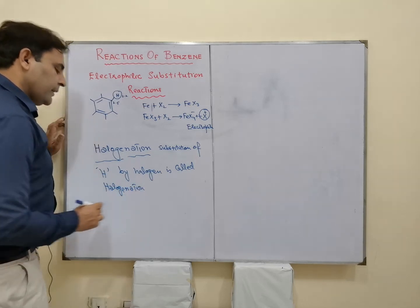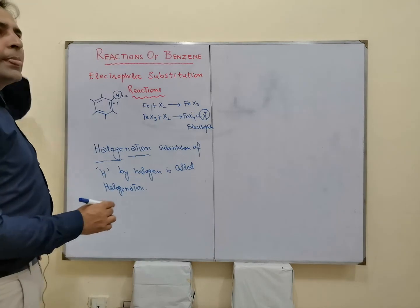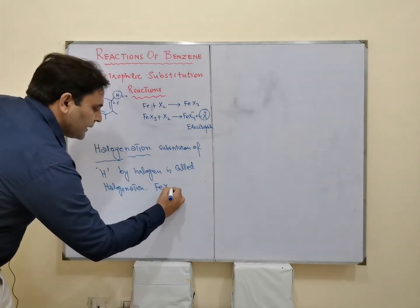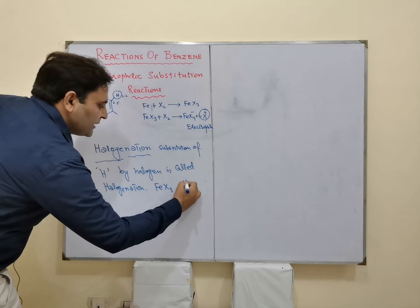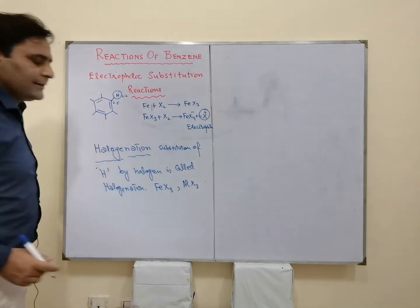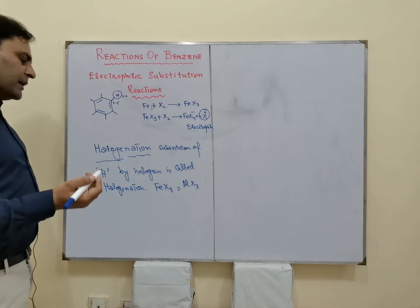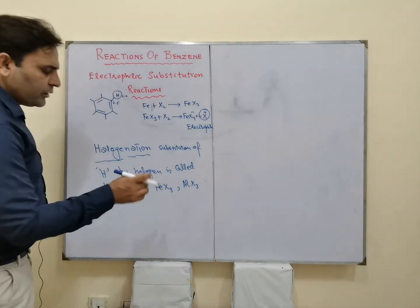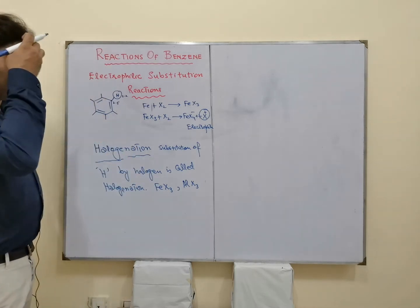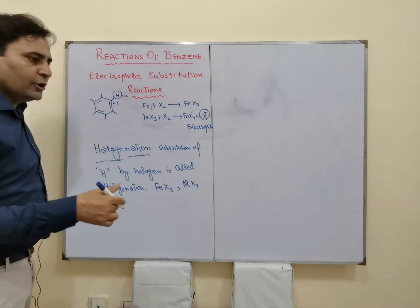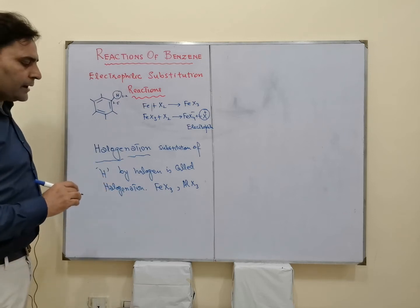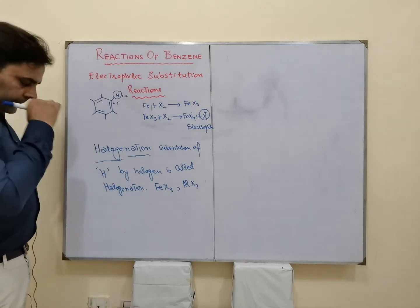عام طور پہ Halogenation کے لئے ہم Iron Halide استعمال کرتے ہیں یا پھر Aluminium Tri Halide استعمال کر سکتے ہیں۔ یا آپ صرف Iron Powder لے لو — Sunlight کی موجودگی میں وہ Chlorine وغیرہ کے ساتھ react کر جائے گا اور Bromine کے ساتھ بھی، اور Iron Halide بنا لے گا۔